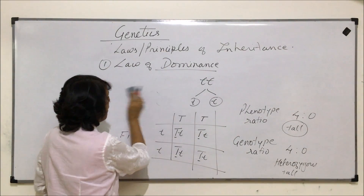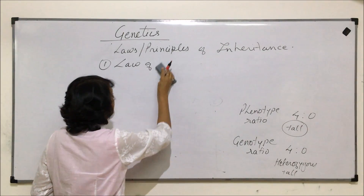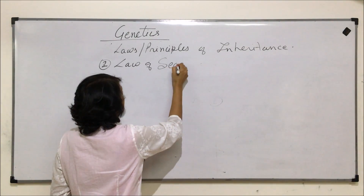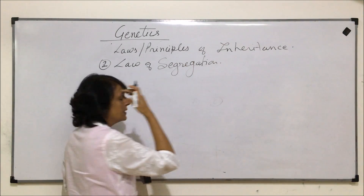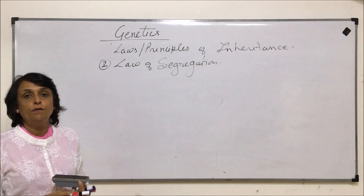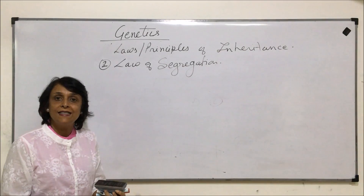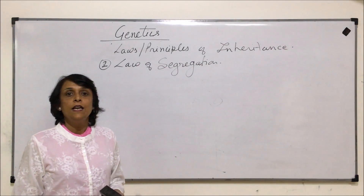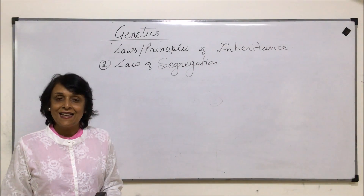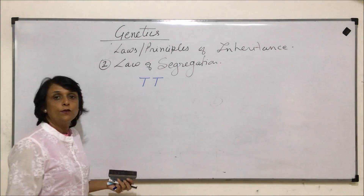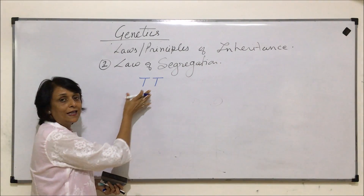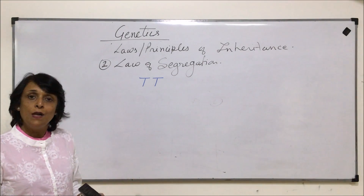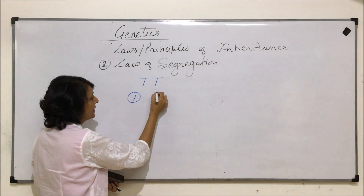The second law is the law of segregation. Segregation means separation. This law says that out of the two alleles, one goes into each gamete. In other words, during gamete formation the two alleles of a gene get segregated or separated. If the parent is homozygous tall, these two alleles will get separated during meiosis or gamete formation, because meiosis is a reductional division and half the number of chromosomes go into each gamete.